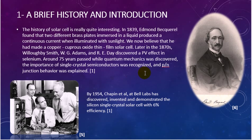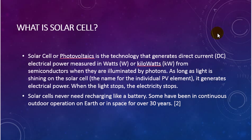By 1954, Chapin at Bell Labs discovered and demonstrated the silicon single crystal solar cell with 6% efficiency.